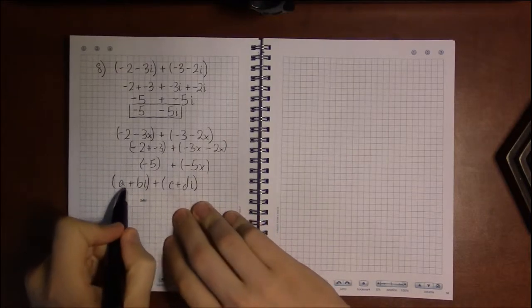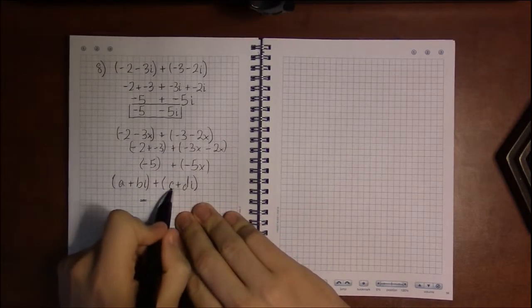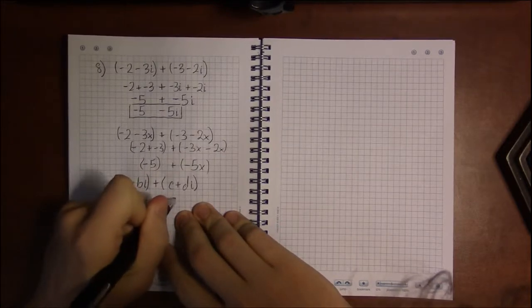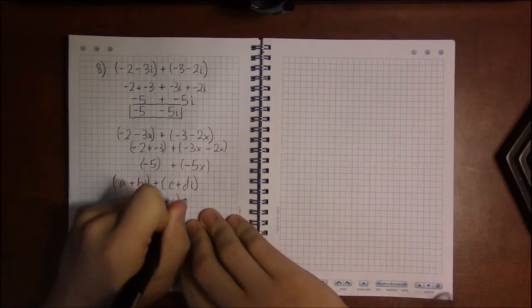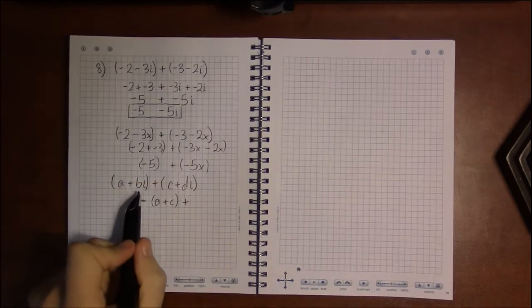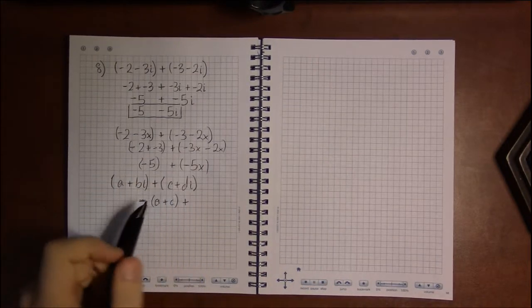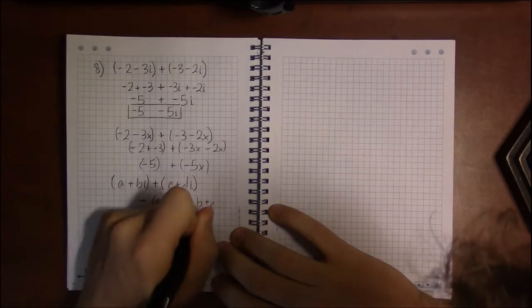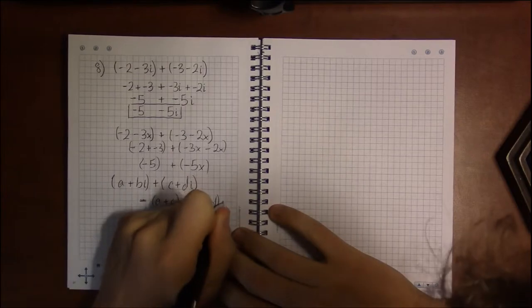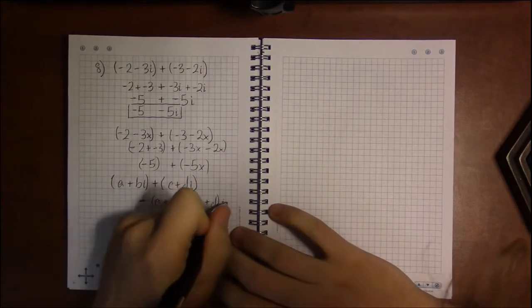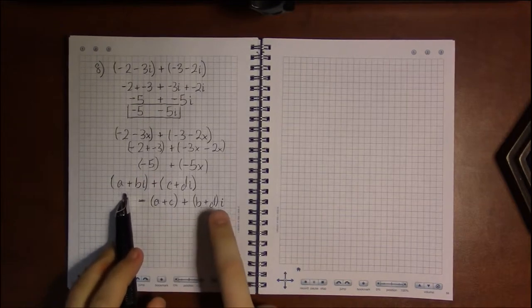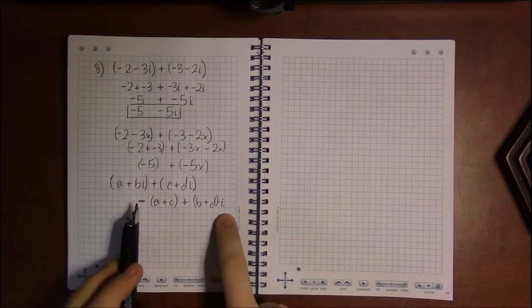Is a complex number whose real part is the sum of the real parts, a and c, so a plus c, and the imaginary part of the result is just the sum of the imaginary terms, b plus d times i. So if you prefer formulas and prefer memorizing formulas, this is the formula for addition.